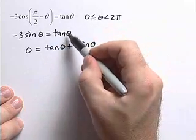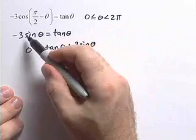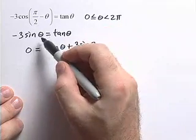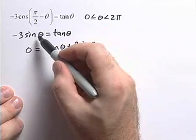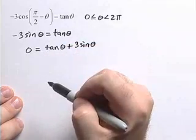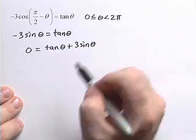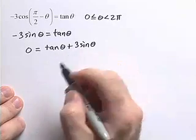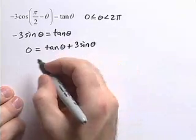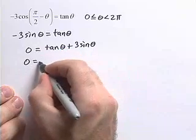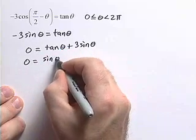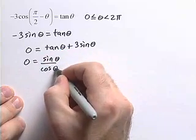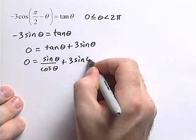Even though we know tangent is sine over cosine, we need to resist the temptation to just divide by sine. Because the sine value can actually be 0, we don't want to divide by 0. So here we have 0 equals tangent theta plus 3 sine theta. We're going to rewrite tangent as sine of theta over cosine theta plus 3 sine theta.